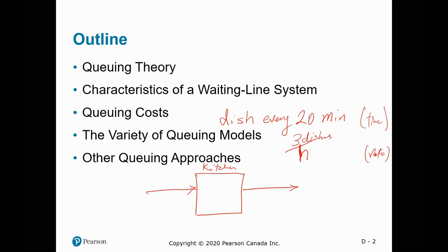Let's think about the rate. Assume this is a process that can handle three requests, three services, or three productions per hour. Now, if on average one request arrives — one customer per hour — do you think he should wait to be served, or can we start serving him right away?